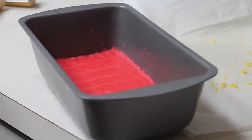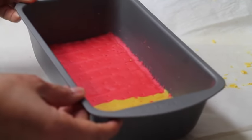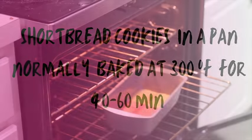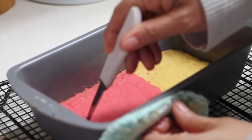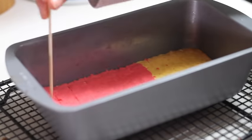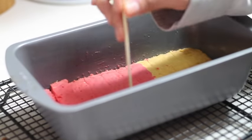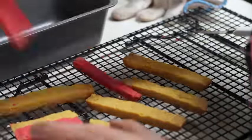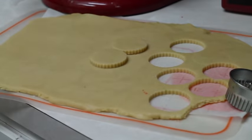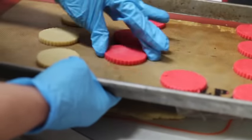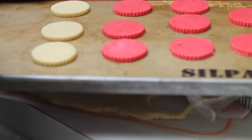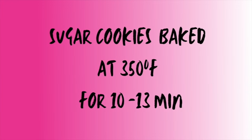This is why some people prefer to bake shortbread cookies in a baking pan. If you bake your shortbread cookies in a pan, you normally need to bake them at 350 degrees Fahrenheit for 40 to 60 minutes. You can also find shortbread recipes that tell you to roll out your cookies and bake them at 350 degrees Fahrenheit for 12 to 14 minutes. Sugar cookies you normally bake at 350 degrees Fahrenheit for 10 to 30 minutes.